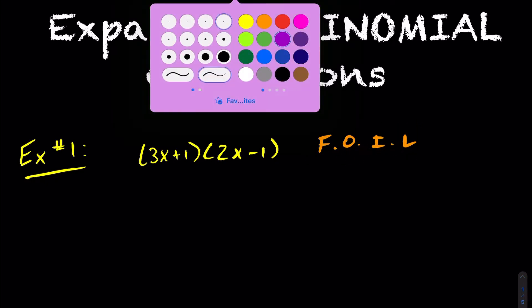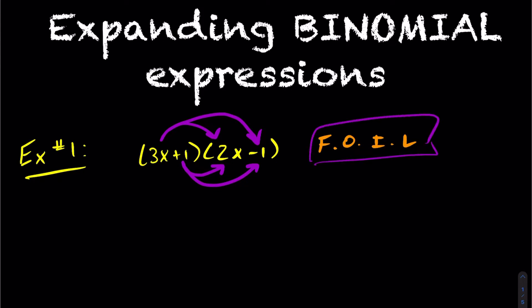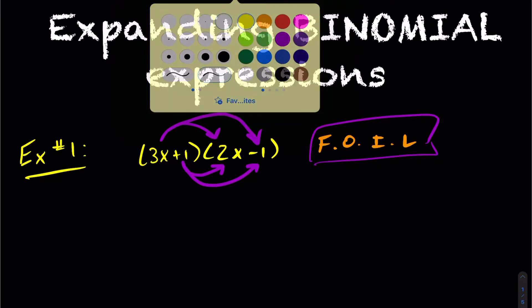What FOIL means is when you're expanding out a binomial, it's going to be the first term times the first term, then the first term times the outside term. Then you move on to your second term: second term times the inside, and second term times the outside. That's where the FOIL method comes from, and it's used quite a lot.